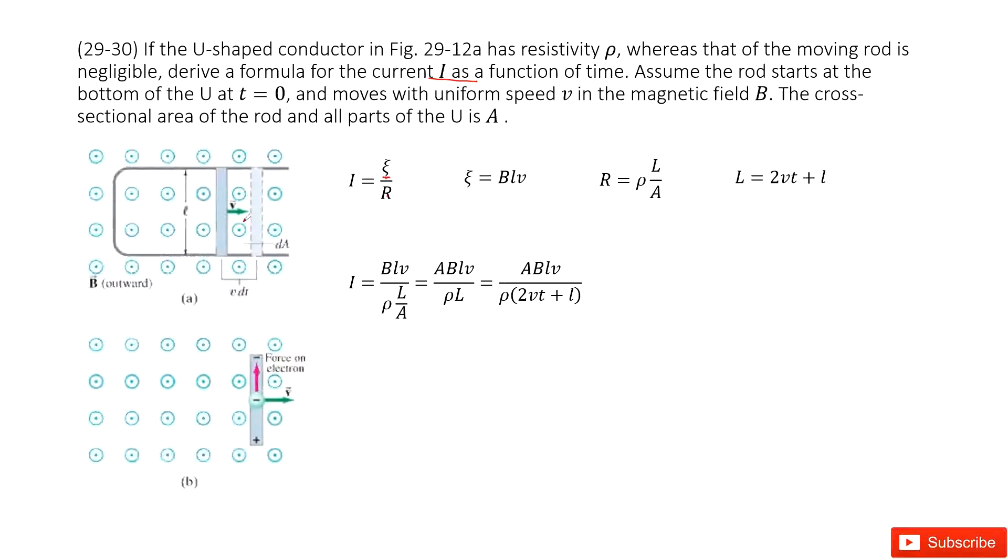How do you find the resistance for this loop? One quantity is given as resistivity. So from the resistivity to the resistance, you can see it is the resistivity times L divided by A.